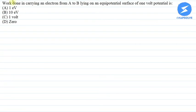The question says that work done in carrying an electron from A to B lying on an equipotential surface of one volt potential. So here we have given A and B for equal potential surface voltage of one volt.